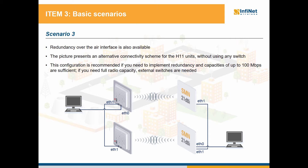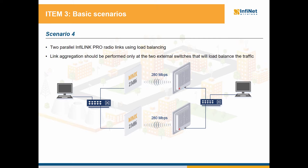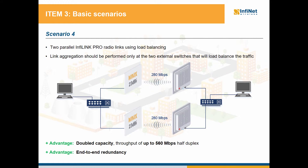You can also ensure 100 Mbps full duplex communication, but we will see in a couple of moments how this can be done. For achieving full radio capacity, you will still need to use two external switches. The last example for load balancing I want to present involves two parallel InfiLink Pro radio links. In this setup, you need to configure link aggregation only for the two external switches that will load balance the traffic between the two radio links. The benefits are that you will double the capacity, achieving a throughput value of up to 560 Mbps half duplex, and you also have an end-to-end redundancy implemented.